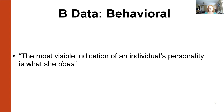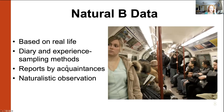Let's talk about the first one in order of the acronym: B data, which is behavioral. People argue, especially behaviorists, that if you really want to know what someone's like, then watch them — watch their behavior, watch how they interact, watch what they choose to do. The most valid indication of what a person's like is what they do, not what they say they do or what other people say they do. So there's a good argument for behavioral data.